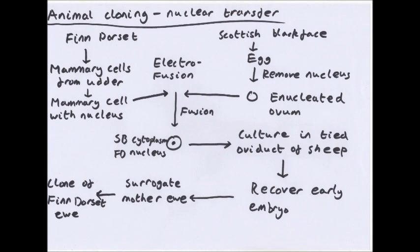Animal cloning by nuclear transfer is the more famous method — this is what made Dolly the sheep — but it's also the more complicated one. Using the book example: you have a Finn Dorset ewe and a Scottish Blackface female. The Finn Dorset gives mammary cells from the udder, which contain the nucleus and the genetic material. The Scottish Blackface ewe gives an egg, and the nucleus is removed, giving you an enucleated ovum.